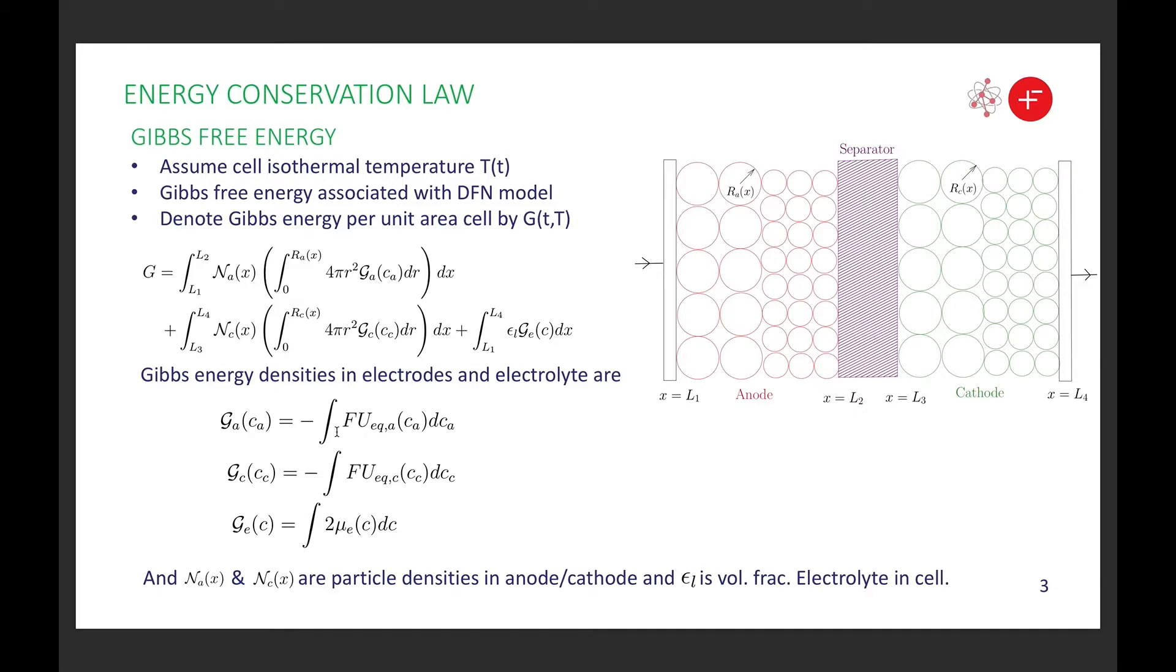The chemical potential, for example in the anode, is minus Faraday's constant times by uA, where uA is the open circuit voltage. The curly Ns are particle densities in the anode and cathode, and the epsilon l is the volume fraction occupied by the electrolyte.